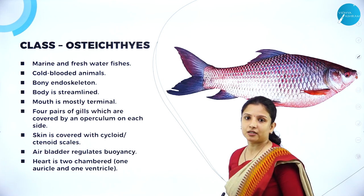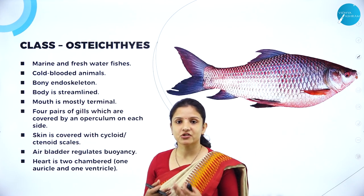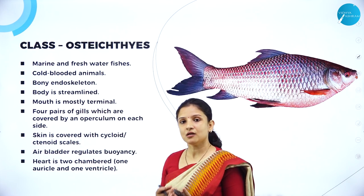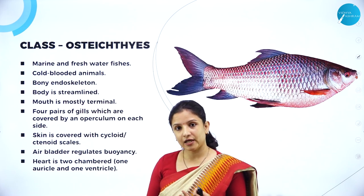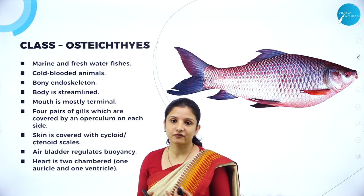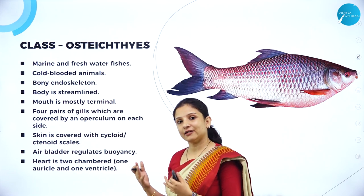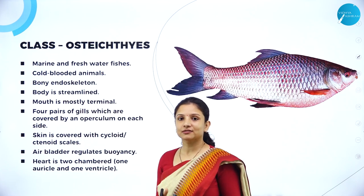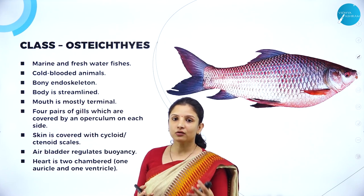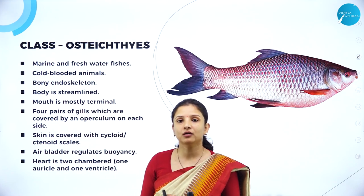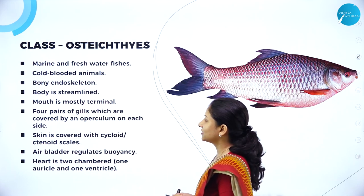All the fishes come under Osteichthyes. We learned in the previous session that sharks and hammerhead sharks come under Chondrichthyes. There is a difference between the type of scale, the arrangement of teeth, and the presence or absence of air bladder with respect to Chondrichthyes and Osteichthyes. Let us look into the characteristics of Osteichthyes.